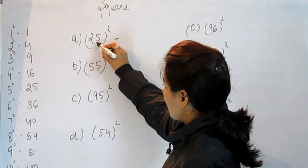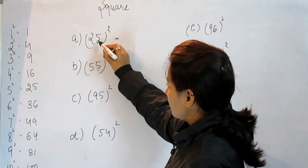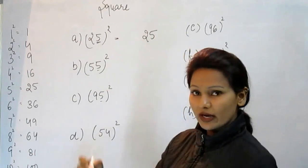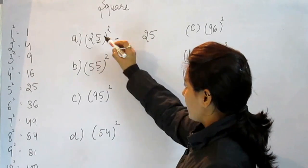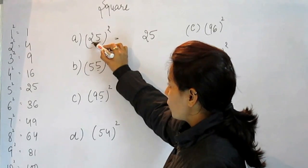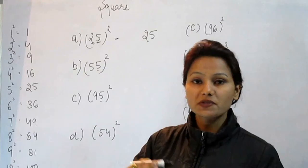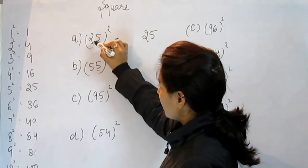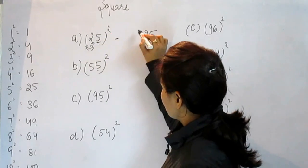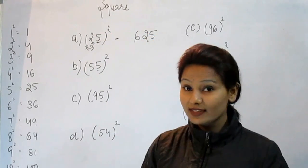See, this is 5. 5 into 5 is 25. And now this 2, multiply this 2 with a number which comes after it. So what comes after 2? That is 3. 2 into 3 is 6.